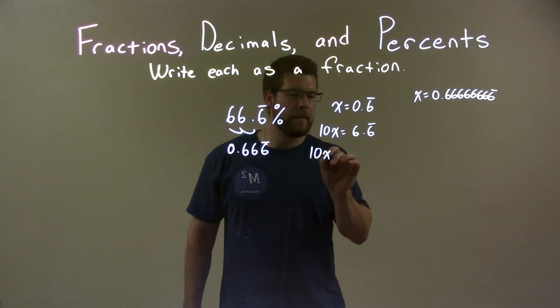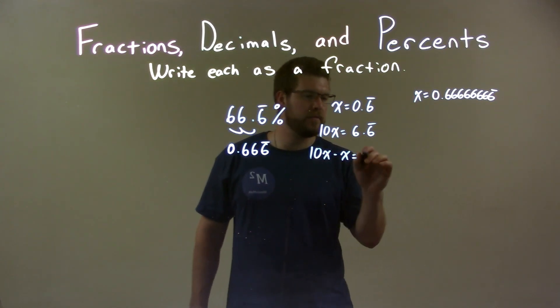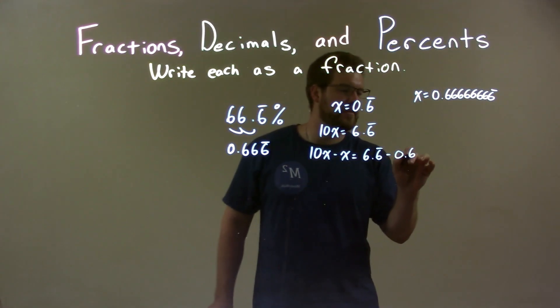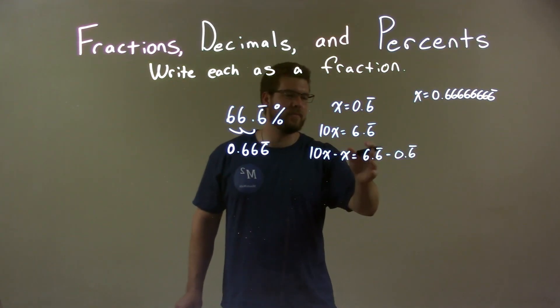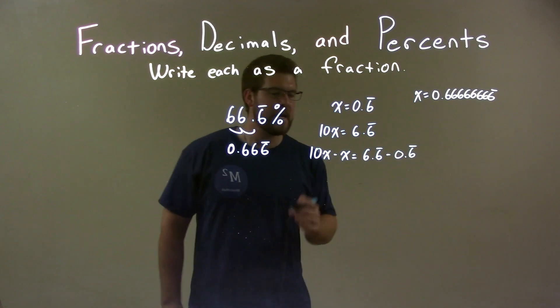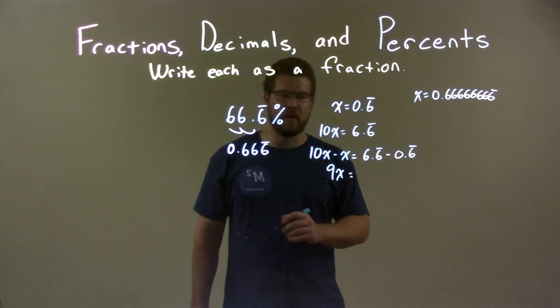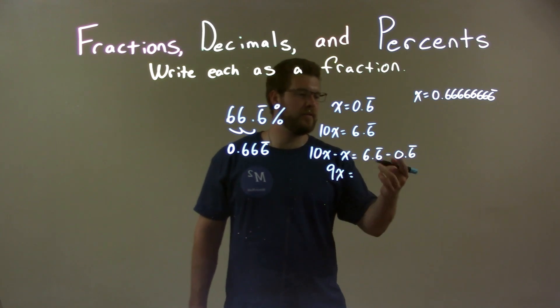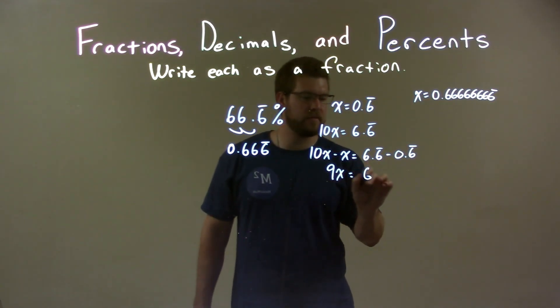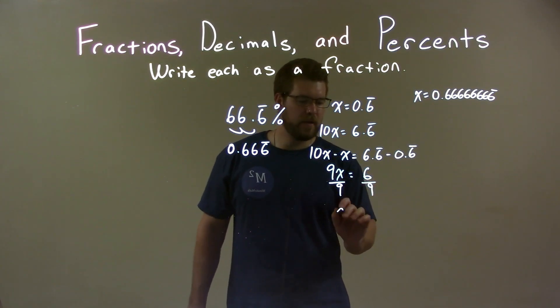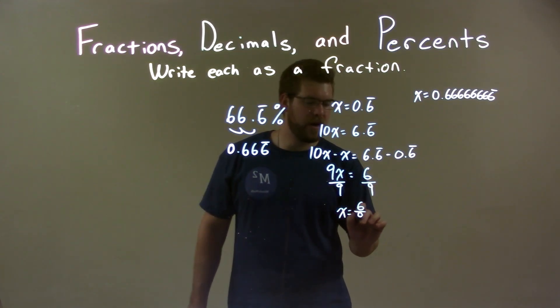So then 10x minus 1x is equal to 6.6 repeating minus 0.6 repeating. 10x minus 1x is 9x, and then 6.6 repeating minus 0.6 repeating is just 6. Then we divide both sides by 9, and we're left with x equals 6 over 9.